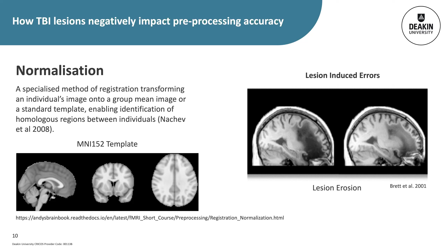As spatial normalisation employs non-linear registration, it often results in a shrinking of the lesioned area as the algorithms try to produce a closer match to the target. This lesion erosion subsequently results in the distortion of surrounding healthy tissue.